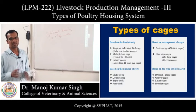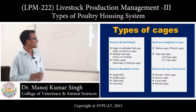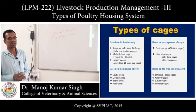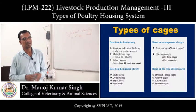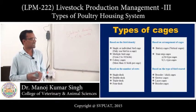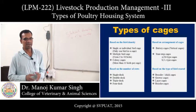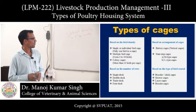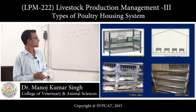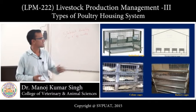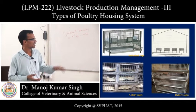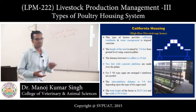Types of cages based on bird density: single or individual cages and multiple bird or colony cages. Based on arrangement: battery cages (vertical) and stair-step cages (M-type or L-type). Based on type of birds: brooder, grower, layer, and breeder cages. Based on number of rows: single, double, triple, and four-deck. Figures shown include individual cages, flat-deck cages, colony cages, and vertical battery cages.